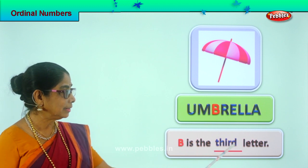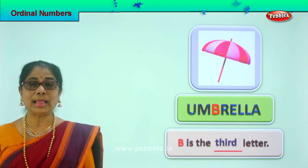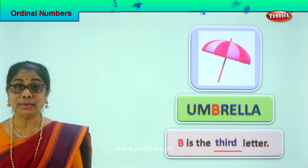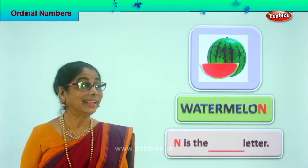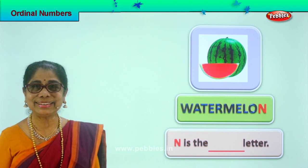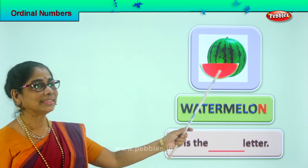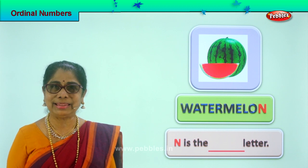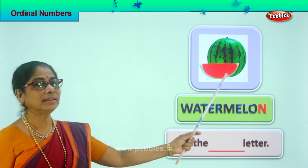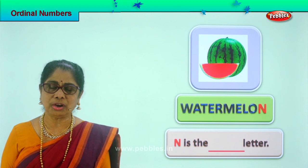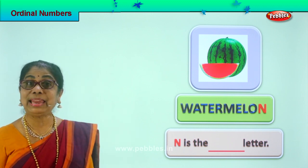B is the third letter. Spell third: T-H-I-R-D. Third. Read: B is the third letter. Did you enjoy? Good. Let's look at another picture — look at what you have. What is it? Watermelon! A nice summer fruit. Outside is green, inside is lovely dark red.